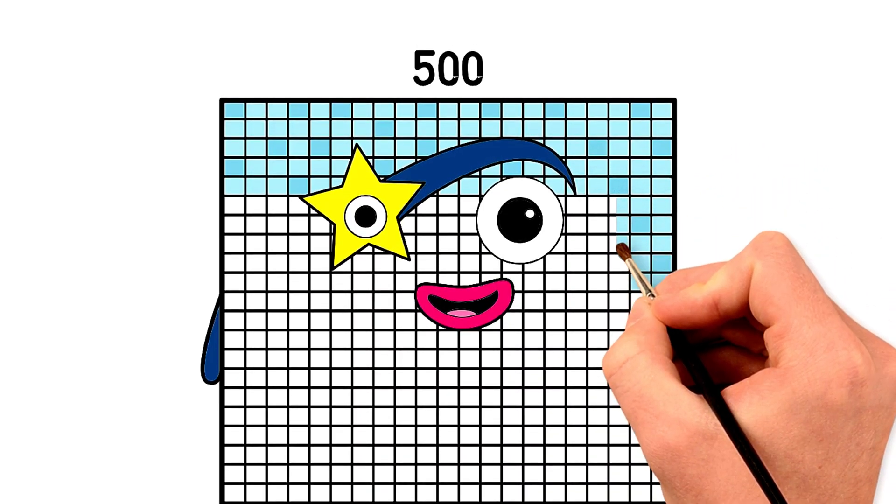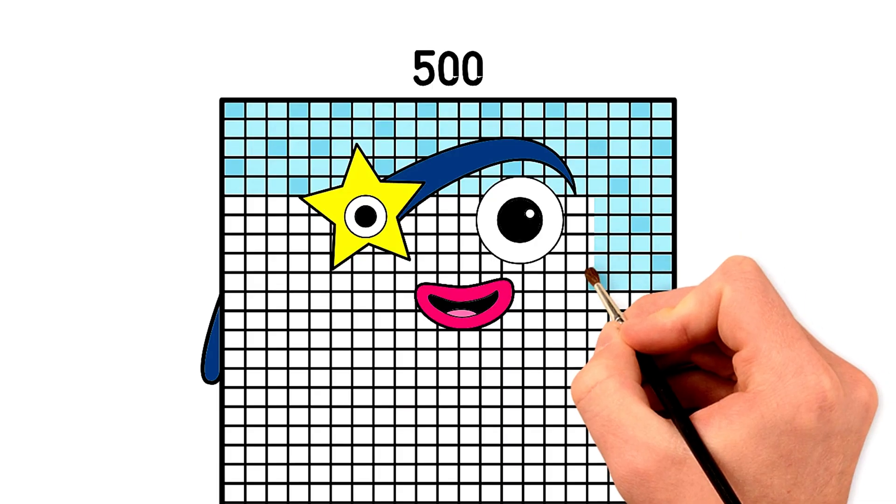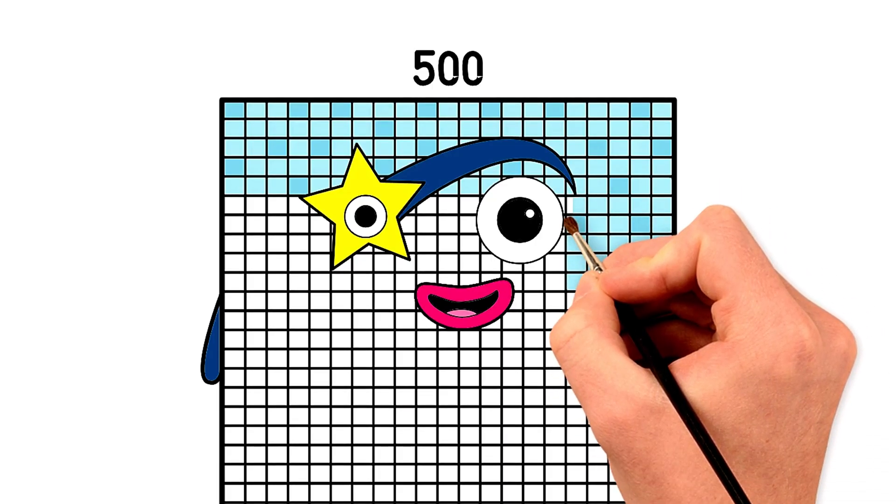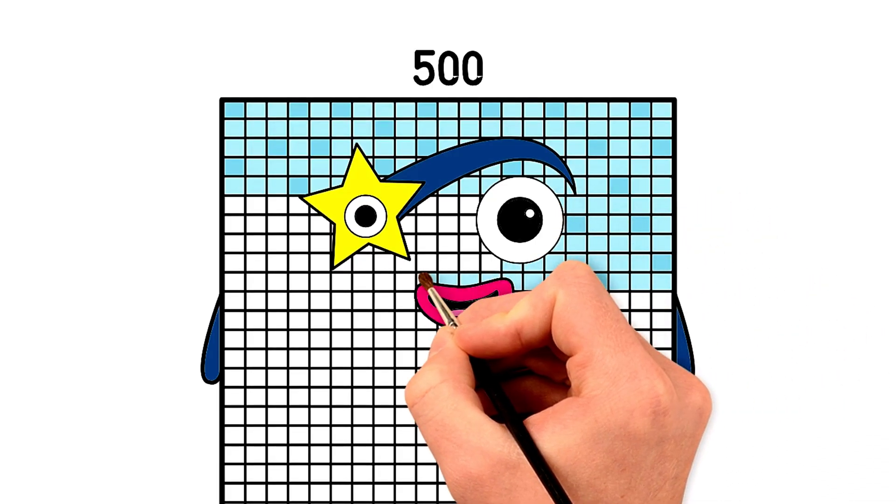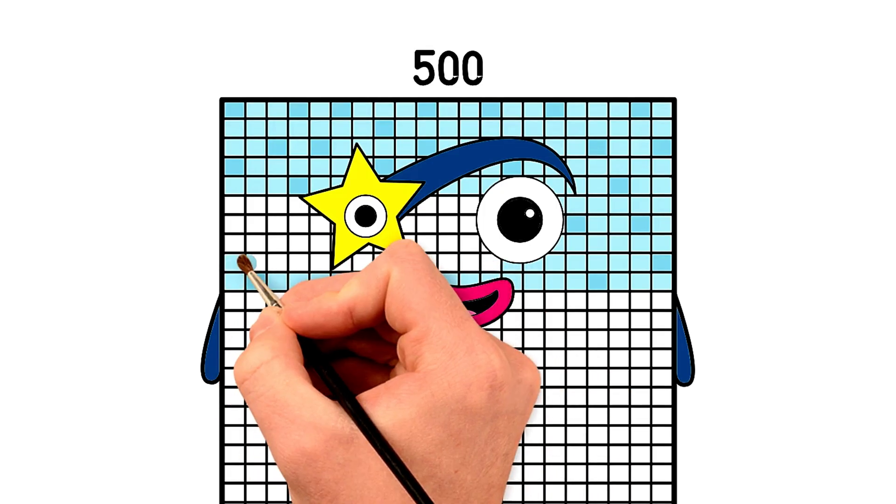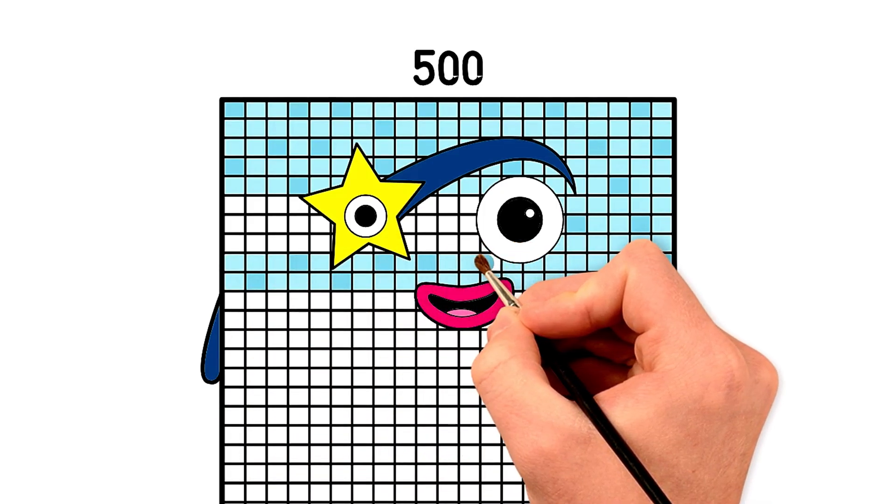Let's count his star points together. One, two, three, four, five. Five points for five hundreds. Perfect!